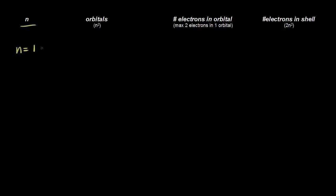The angular momentum quantum number depends upon the principal quantum number. When n is equal to one, let's think about the allowed values for l. So l goes from zero all the way up to n minus one. Well, if n is equal to one, then n minus one equals zero, and so that's the only allowed value for the angular momentum quantum number.